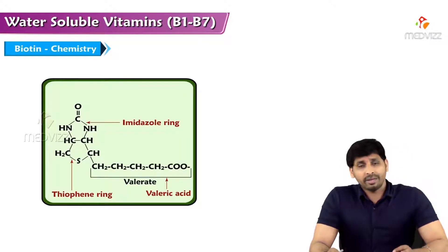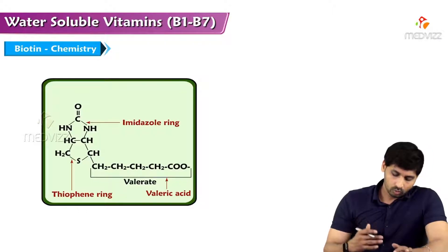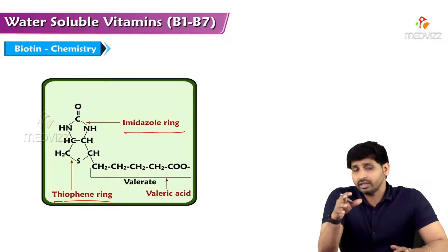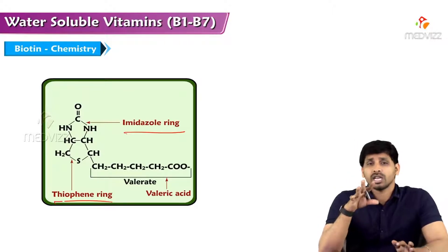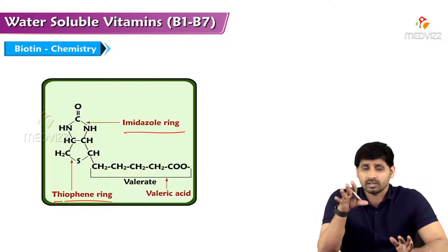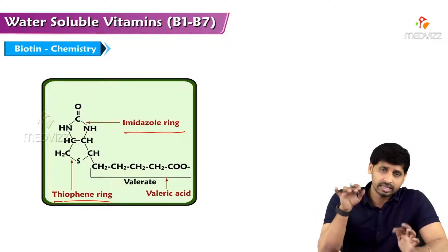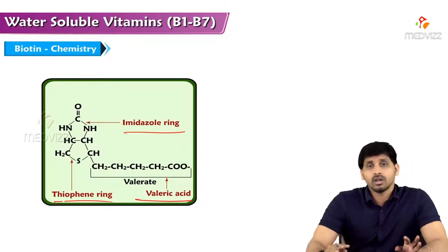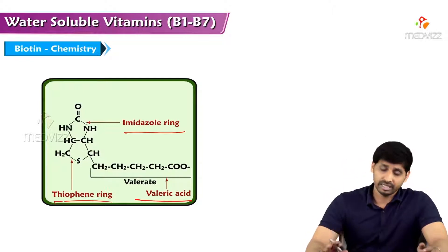To talk about the chemical structure of biotin, it is made up of three parts. One is the imidazole ring, the other one is the thiophene ring. This is the second B-complex vitamin that has sulfur in its structure. The first B-complex vitamin with sulfur is thiamine. Next to thiamine, biotin is the second B-complex vitamin with sulfur in the structure, and the third part is valeric acid. These are the three parts which make up B7.